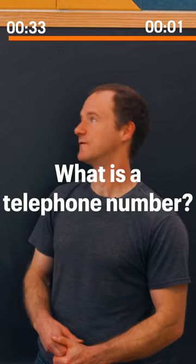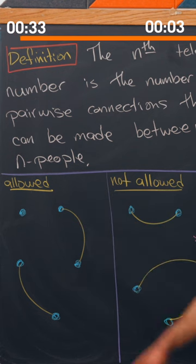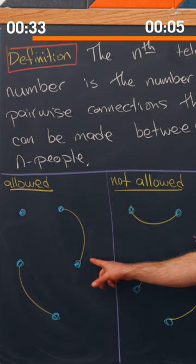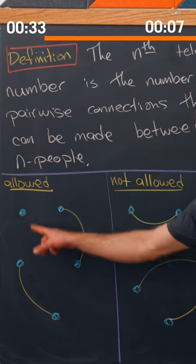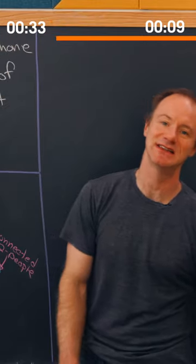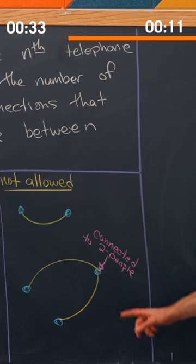What is a telephone number? Here we've got five people, and these two are connected and these two are connected. Notice this person up here is not connected to anyone — that's allowed.